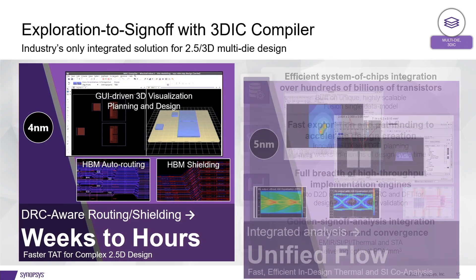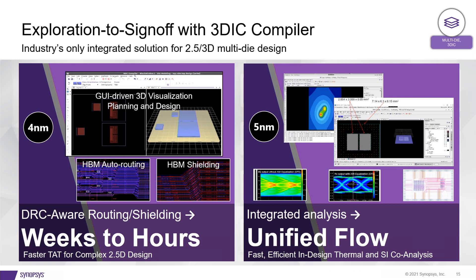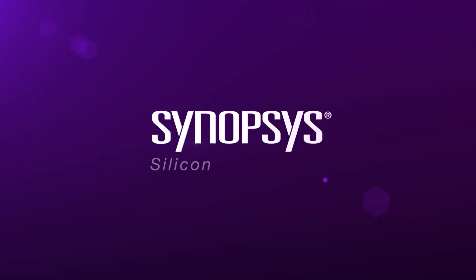Here are a couple of case studies illustrating how customers are deploying 3DIC Compiler — whether to rapidly accelerate the routing of interposers and connectivities between dies, or to analyze thermal, signal integrity, and power integrity, all within an integrated cockpit. These innovations have enabled companies to rapidly accelerate the time it takes to pull 3DIC designs and multi-die systems together. Thank you very much for joining us today.